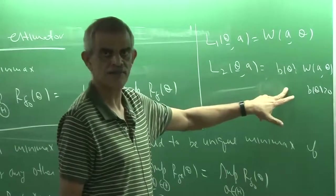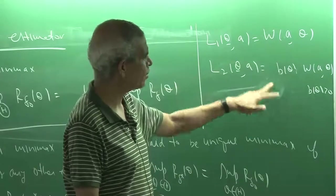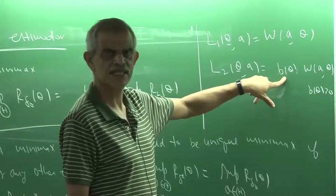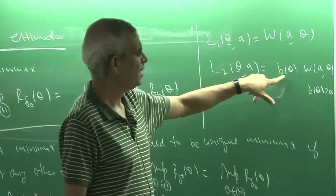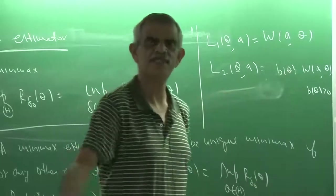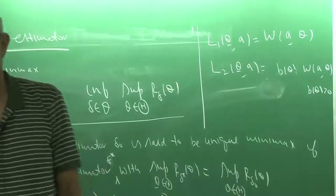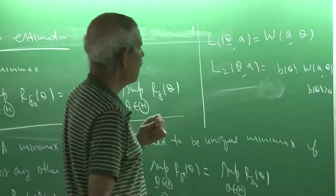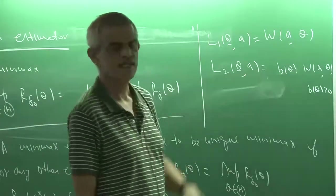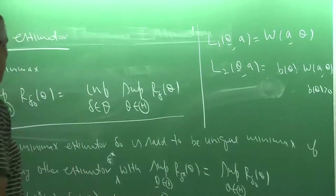A Minimax estimator under w(a, theta) may not be a Minimax estimator under b(theta)*w(a, theta), because when taking the supremum in the two situations they may become different. The same applies to Bayes estimators, since the Bayes risk averages over theta and different b(theta) values correspond to different weights on the loss function, yielding different Bayes estimators. So minimaxity depends on what constant weight has been attached to the loss function.